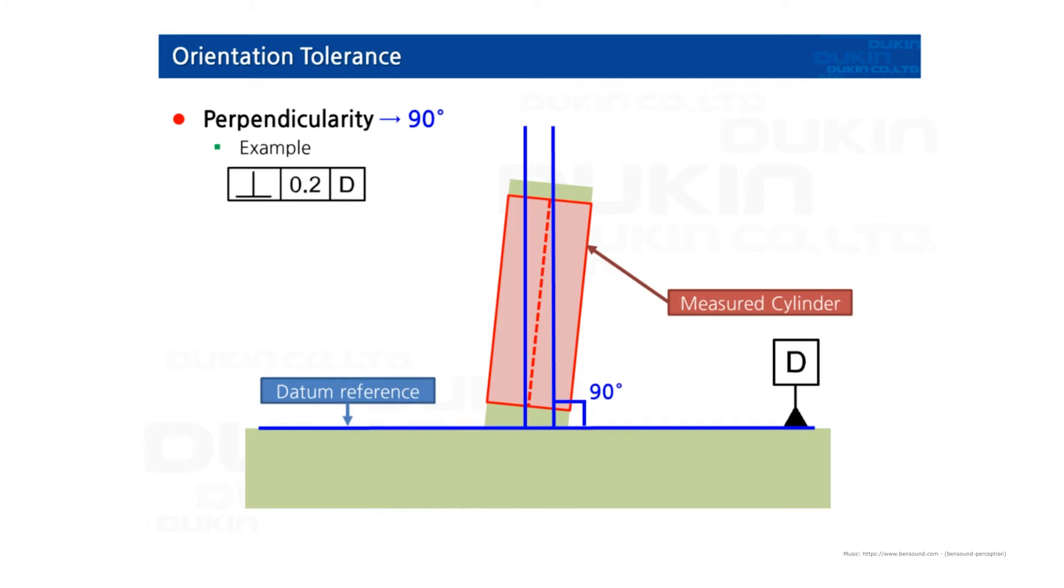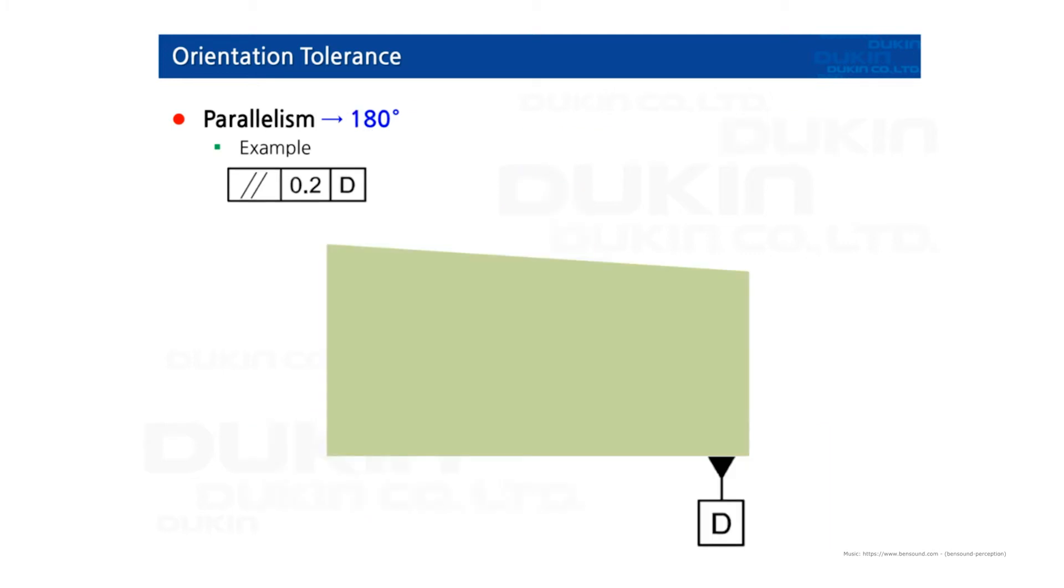0.2 apart that are perpendicular to datum plane D. This tolerance zone is indicated in millimeters. The principle of perpendicularity is 90 degrees, but the tolerance zone and the value of perpendicularity are described in millimeters.